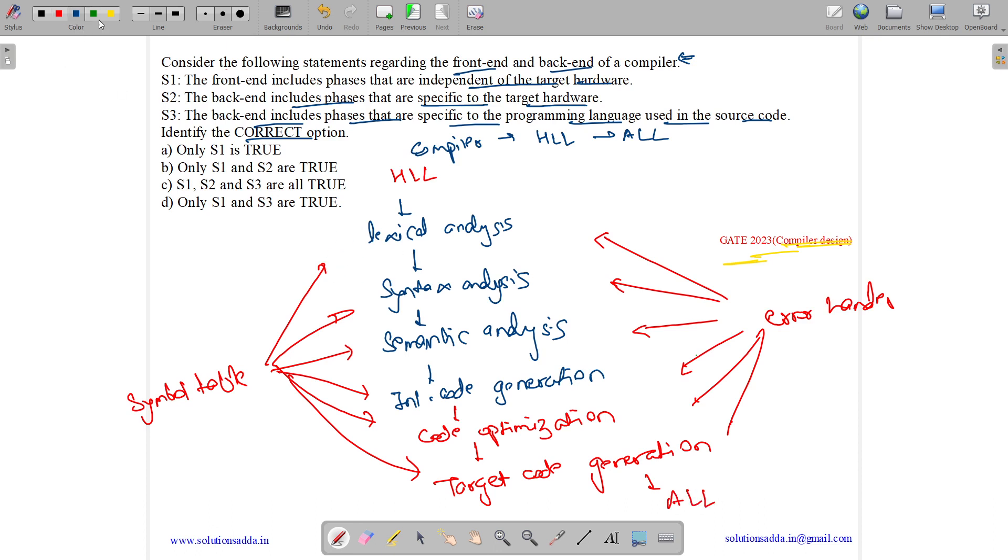In lexical analysis phase, we match the lexemes with patterns to generate the tokens. Then we do syntax verification. Here we check for semantic error, here we check for syntax error. Then we convert it into intermediate code like 3-address code or directed acyclic graph.